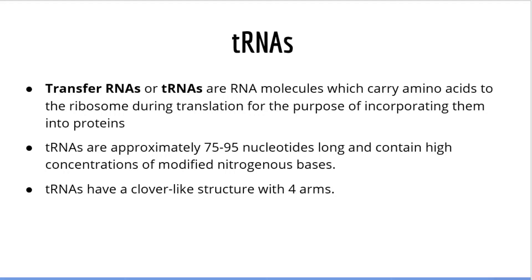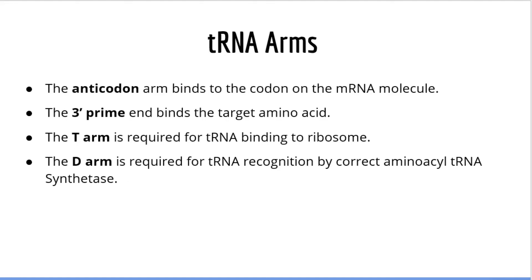The structure of tRNAs is extremely important for understanding their function. tRNAs have a clover-like structure with four arms, each with an important function. These arms are the anticodon arm, the 3' arm, the T arm, and the D arm. The anticodon arm contains a three-nucleotide sequence which binds a complementary sequence on the mRNA molecule called a codon. We will talk more about codons in the next few slides.